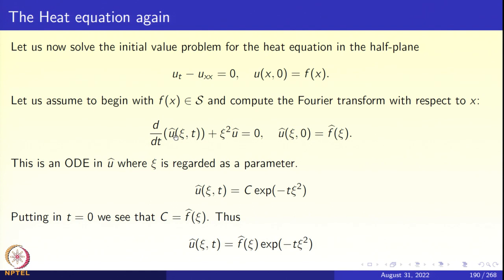It is a linear ODE, but how do we get the initial conditions? At time t=0, û is simply the Fourier transform of the initial data: û(χ,0) equals f̂(χ). So we have the ODE and its initial condition.